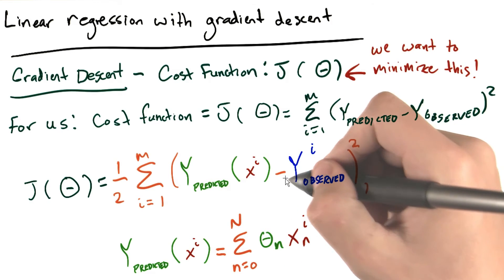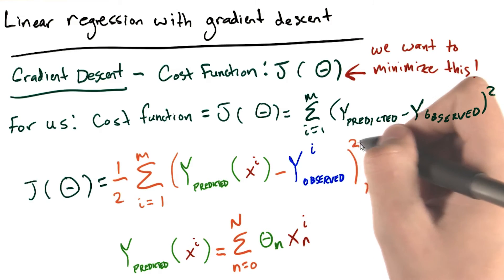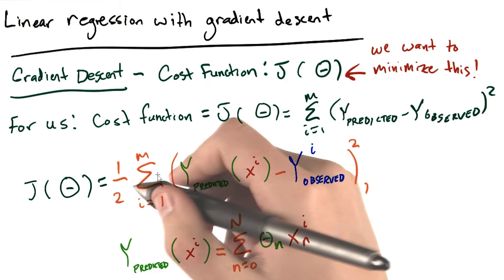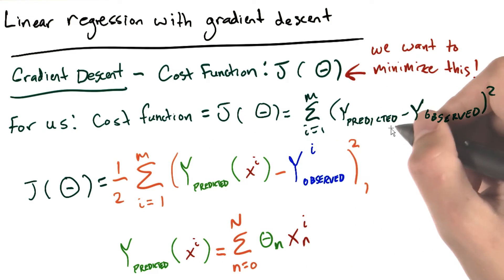minus the observed y squared. So this is just our error squared term, summed over all the data points. No different than the equation that we have up here.